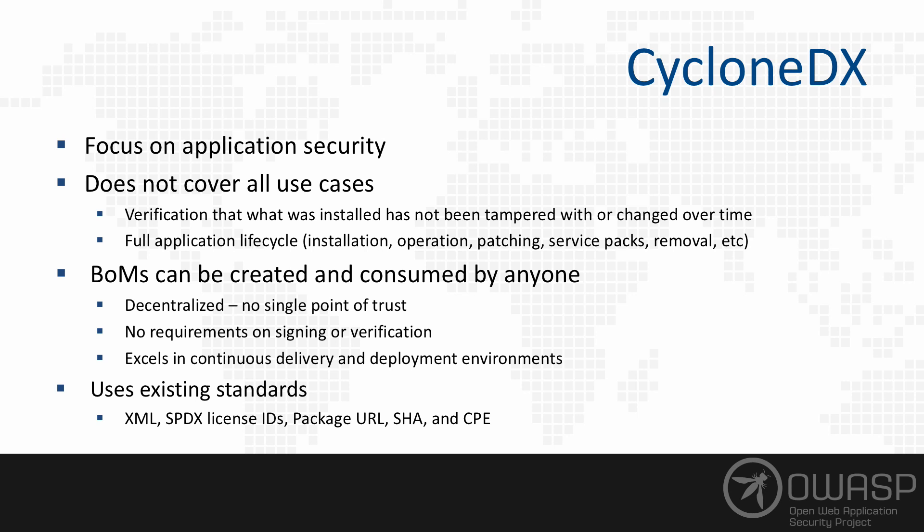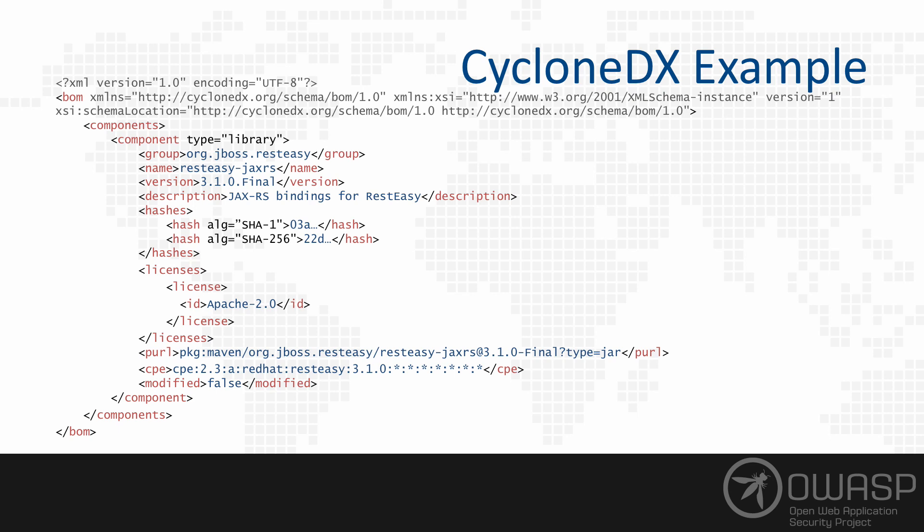This decentralized nature really propels CycloneDX to be useful in a continuous delivery and deployment environment where components and their usage are changing, sometimes minute to minute. CycloneDX builds upon existing standards: it's written in XML, incorporates SPDX license IDs, uses the package URL specification, relies on SHA algorithms for file hashing, and supports CPE identifiers as defined by NIST and MITRE.